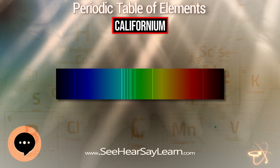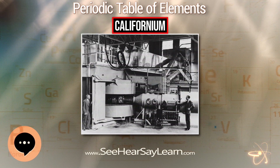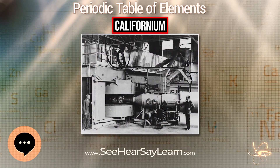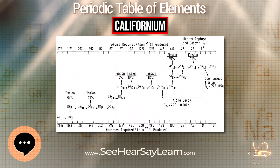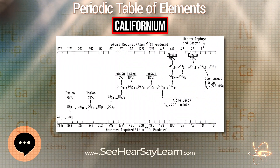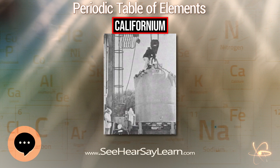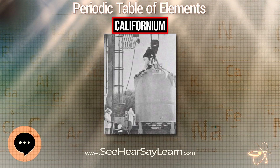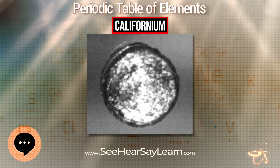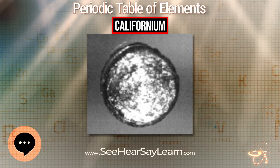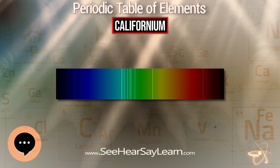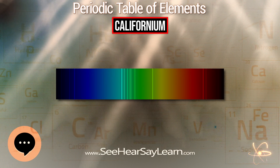Two crystalline forms exist for californium under normal pressure: one above and one below 900 degrees C. A third form exists at high pressure. Californium slowly tarnishes in air at room temperature. Compounds of californium are dominated by the plus-3 oxidation state.